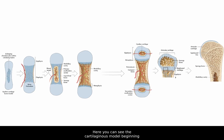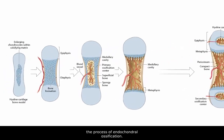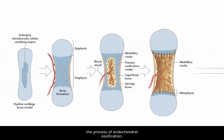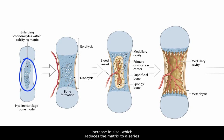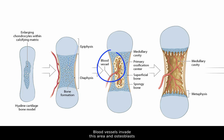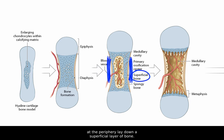Here you can see the cartilaginous model beginning the process of endochondral ossification. The chondrocytes in the center of the model become active, increase in size which reduces the matrix to a series of small struts and then die leaving open spaces. Blood vessels invade this area and osteoblasts at the periphery lay down a superficial layer of bone.